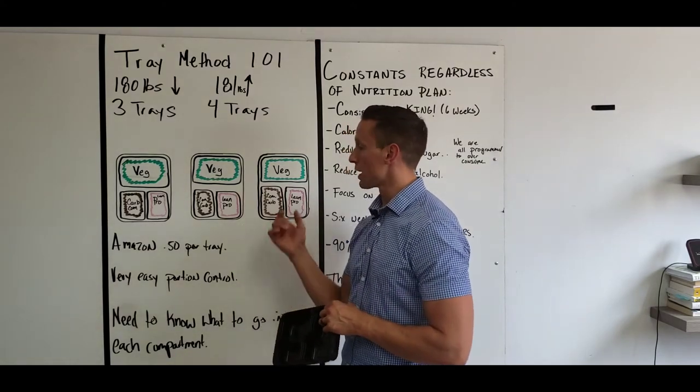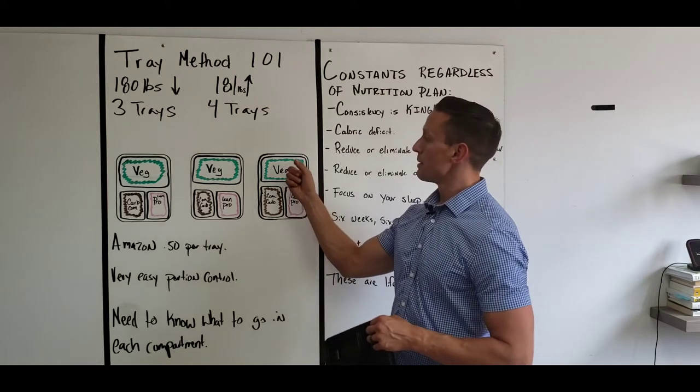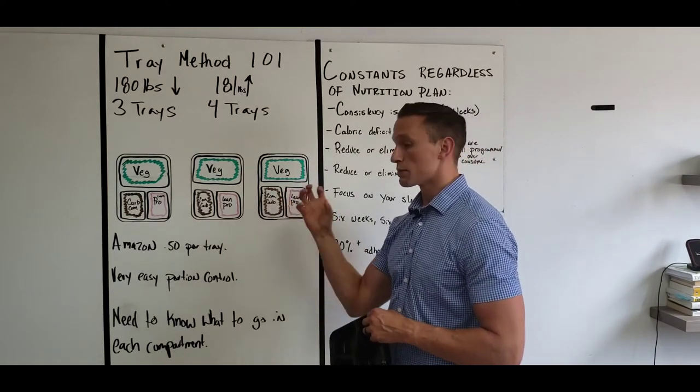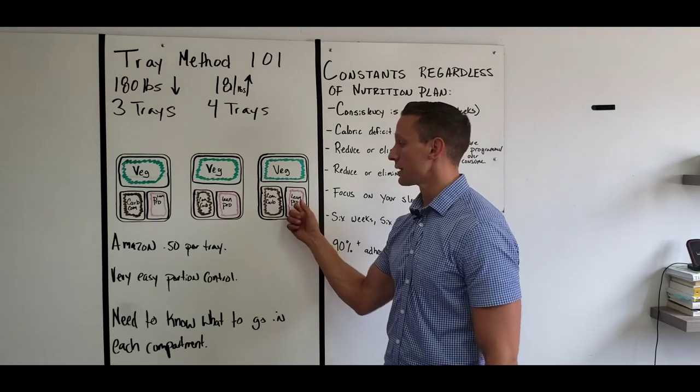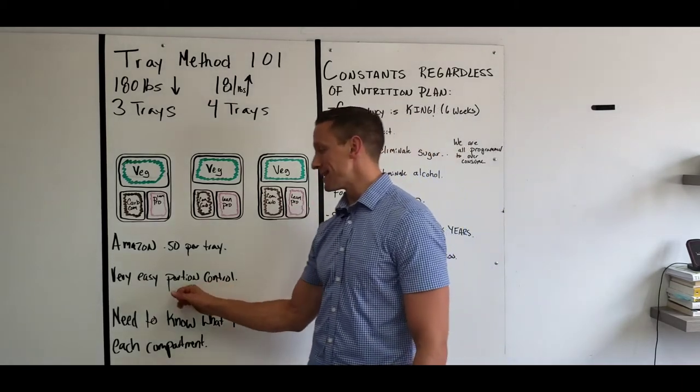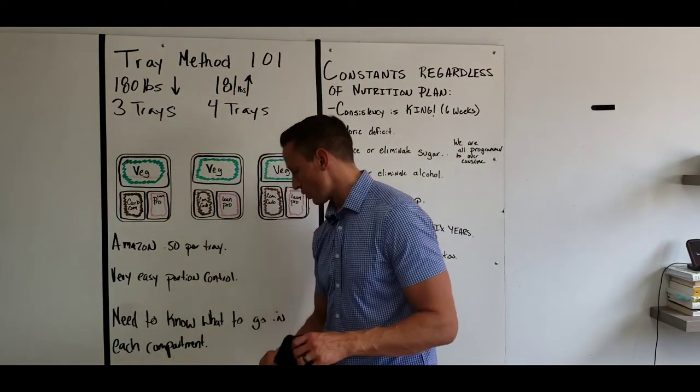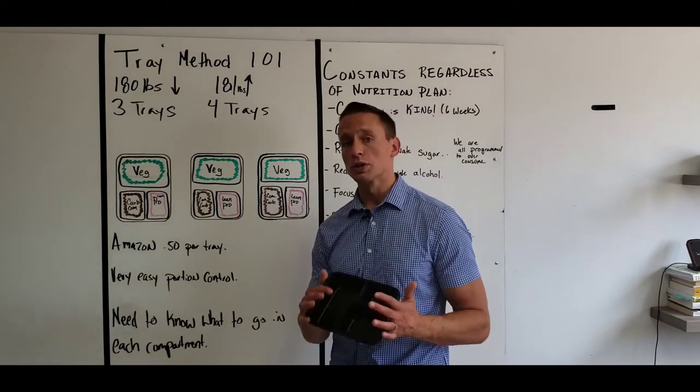And then last but not least, we're going to have some dinner. Again, big, big emphasis on the vegetables. Again, smaller serving of complex carbohydrate, lean protein. This is an easy way to do our portion control. We do need to know what goes into each compartment.